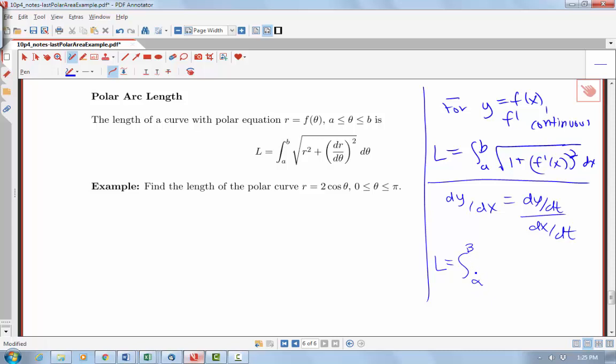where we go from alpha and beta, between alpha and beta, where those would be the range of values for t, and then we'd integrate the square root of dx dt squared plus dy dt squared dt.